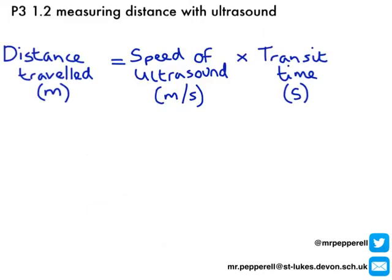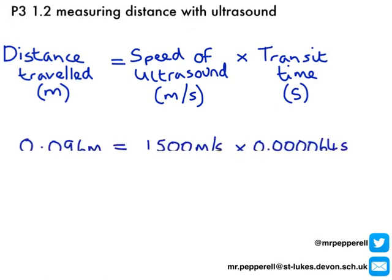So how can I work it out? If I know how long it takes my pulse to travel to the back of the eye and back to the transducer again, I can rearrange the distance-time-speed equation to work out the distance that's been travelled. Distance divided by time gives speed, so I can rearrange that to find distance. I need to know the speed of ultrasound inside the human body, which is 1,500 metres per second.